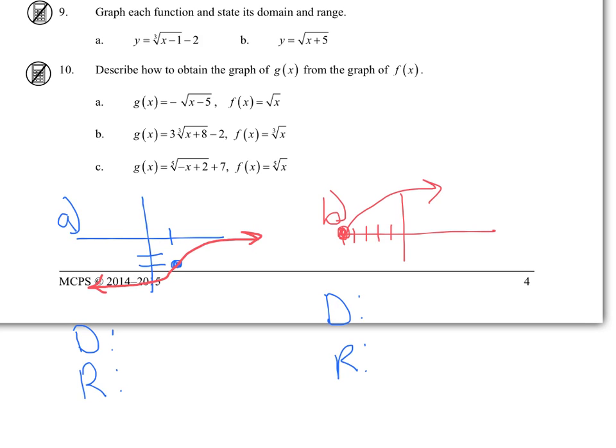And I have to go back and do my domain and range. So the domain for A is all reals. And the range is all reals. The domain for B is x is greater than or equal to -5. And the range is y is greater than or equal to 0.